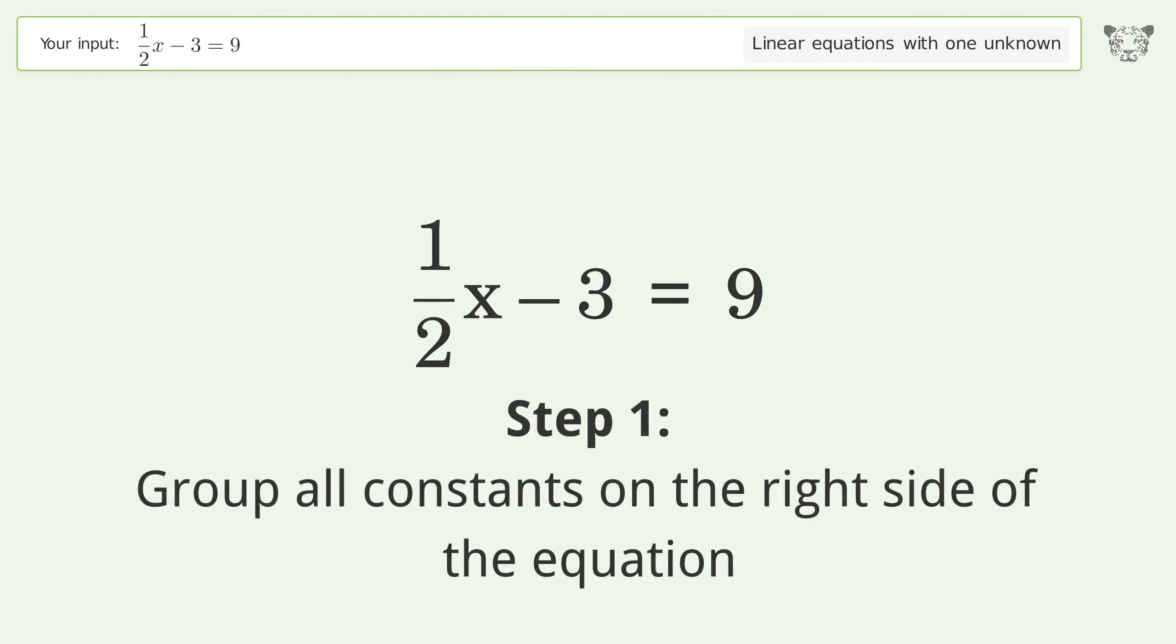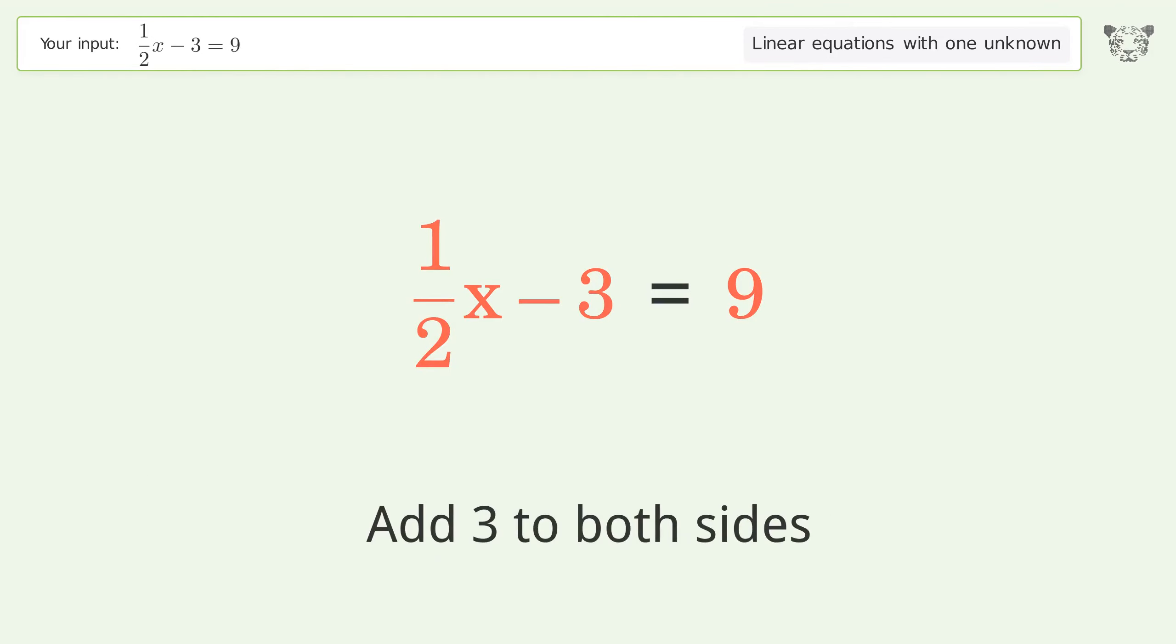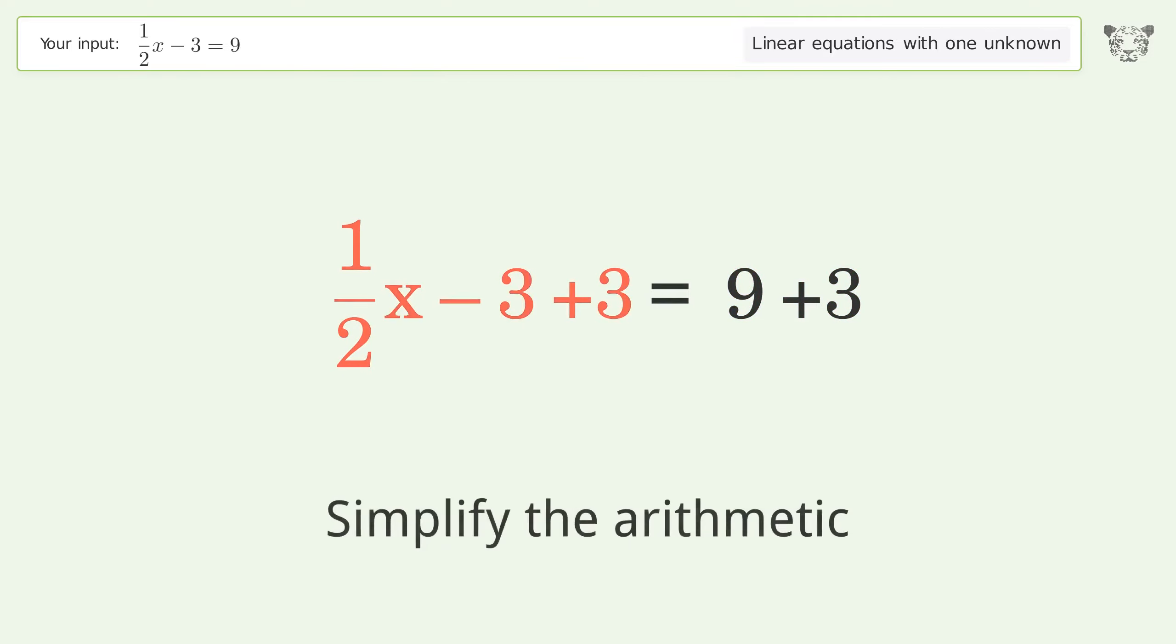Group all constants on the right side of the equation. Add 3 to both sides. Simplify the arithmetic.